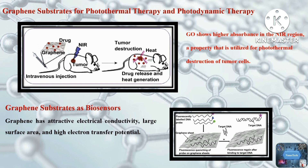Graphene-based biosensors are also used for pathogen detection. Researchers demonstrated a nanoelectronic biosensor for the detection of E. coli using CVD graphene functionalized with anti-E. coli antibodies, passivated using Tween 20. This graphene biosensor can detect E. coli with high specificity and selectivity, and the conductance of the graphene sensor increases with the increased number of E. coli attached on the graphene sheet.